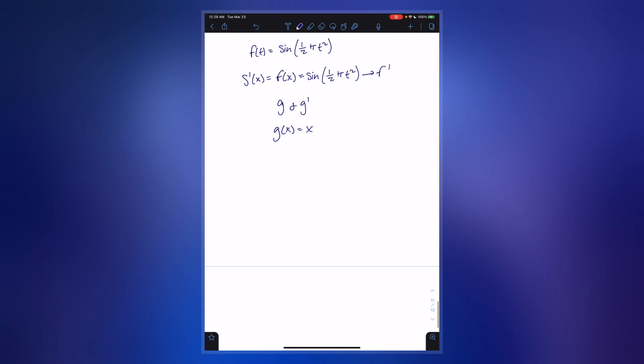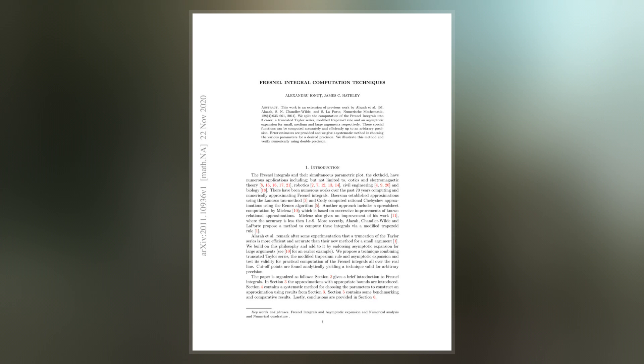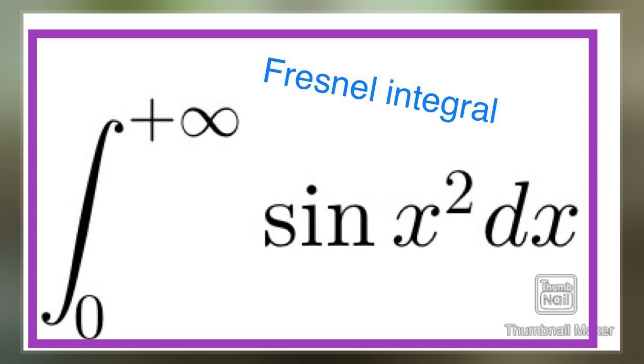The Euler spiral, also known as Cornu spiral or clothoid, is the curve generated by a parametric plot of S against C. The Cornu spiral was created by Marie-Alfred Cornu as a nomogram for diffraction computations in science and engineering.